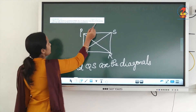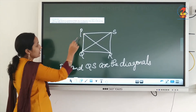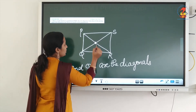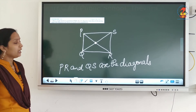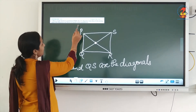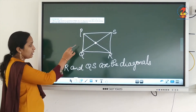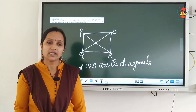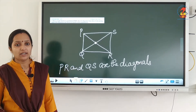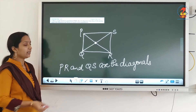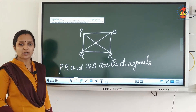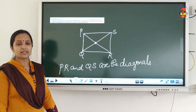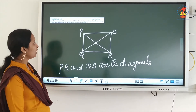Now what is our question? Is the meeting point of the diagonals — these two diagonals are meeting at this point — in the interior or exterior? Is the meeting point of the two diagonals in the interior or in the exterior?